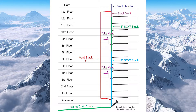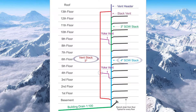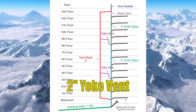Now, if I look down on the fourth floor, I'm going to see another yoke vent. It is connected into a four-inch soil away stack and a three-inch vent stack. I need to be one size smaller than the smallest, so one size smaller than the three-inch vent stack is a two-inch yoke vent. And yes, it is that easy, and it is not going to get more difficult.